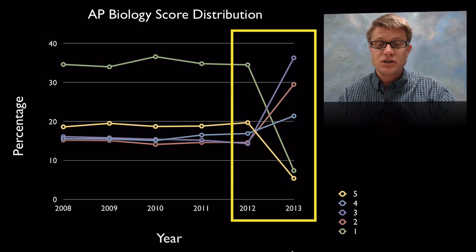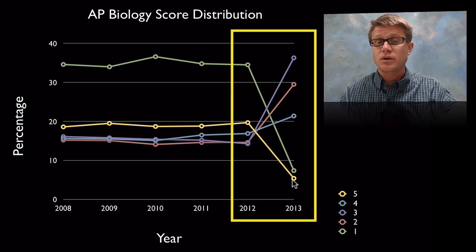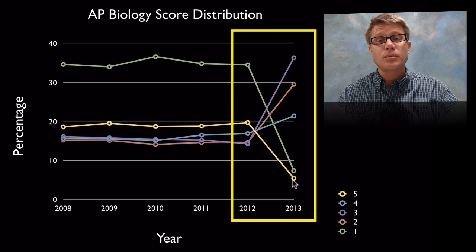And so we see a huge decrease in the number of ones, an increase in threes and fours, and a big decrease in the number of fives. And this has a lot of people upset.